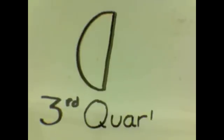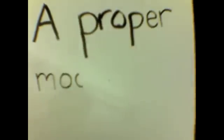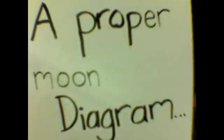The waning stage of a first quarter moon is a third quarter moon. The reason it's called the third quarter moon is because at this stage, the moon is three quarters of the way through its cycle. This is what a proper moon diagram is supposed to look like.